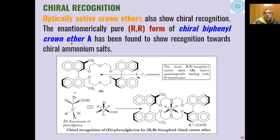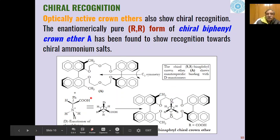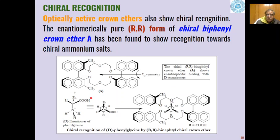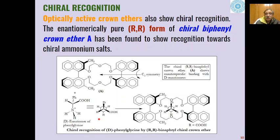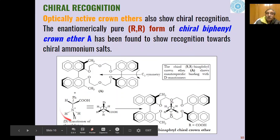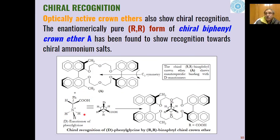Another example is the optically active crown ether. RR-binaphtyl crown ethers in their RR form show enantiospecific binding with D-enantiomers of amino acids. If we try to bind the L-enantiomer of, say, phenylglycine, it will not bind to this optically active crown ether. The crown ether binds only the D-enantiomer of chiral amino acids like phenylglycine — this is an example of chiral recognition where one enantiomer is selectively bound to the host molecule.